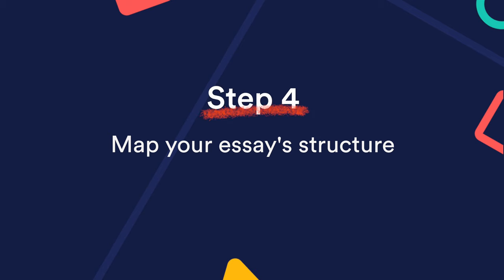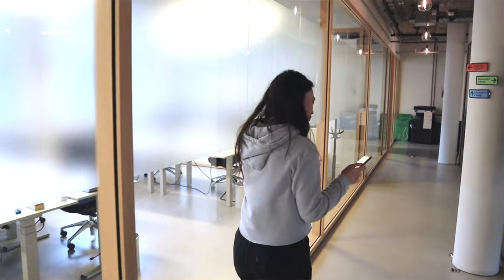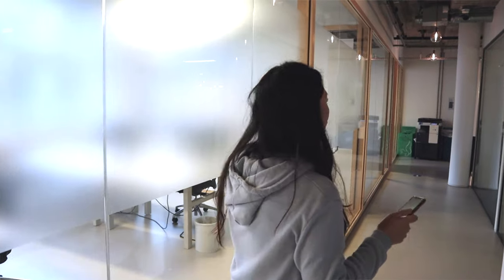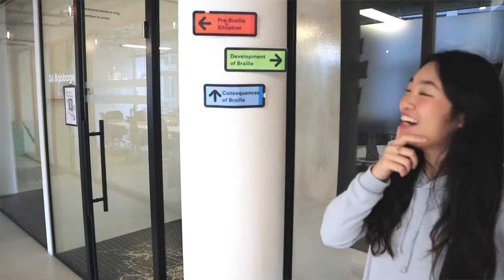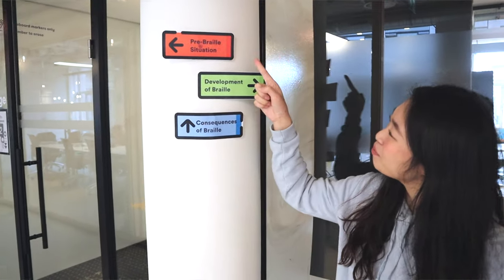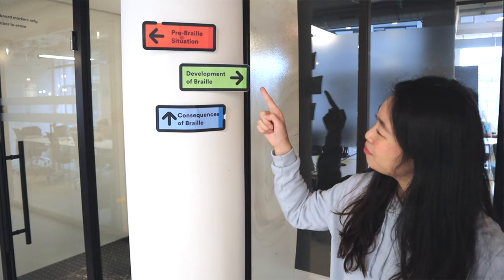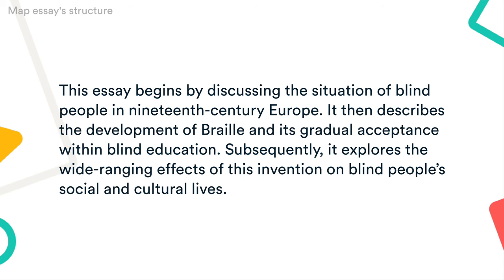But don't head over just yet — we've got one more step to go. Step 4: Map your essay structure. Particularly in longer essays, it's helpful to end the introduction by signposting what will be covered in each part. Keep it concise and give your reader a clear sense of the direction your argument will take. In our example, we map out the three main parts of the essay: the pre-braille situation, the development of the invention, and the consequences.